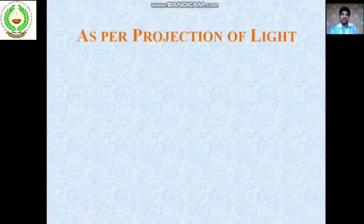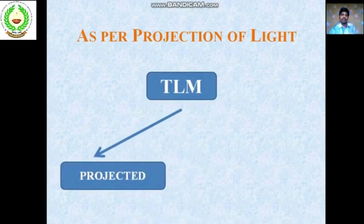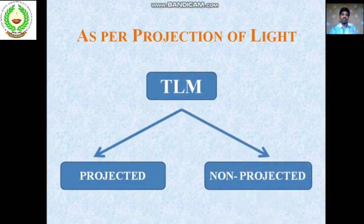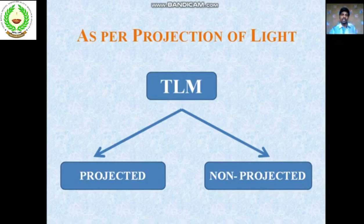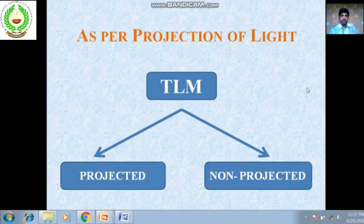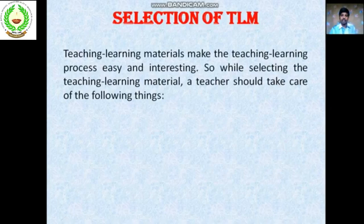As per the projection of light, you can also divide teaching aids into two types: projected and non-projected. Projected teaching aids — such as projector, overhead projector, or film projector — can project light onto the wall. Non-projected teaching aids — such as charts and pictures — cannot project light. These are the normal TLMs that make the teaching-learning process easy and interesting.